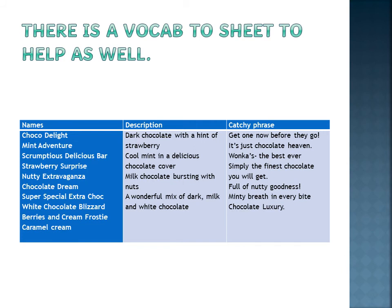For our description: a dark chocolate with a hint of strawberry; cool mint in a delicious chocolate cover; or at the very bottom, a wonderful mix of dark, milk, and white chocolate. Notice that these don't go together — they don't match; they're just bits you can magpie. And on the right we have some catchy phrases: 'Get one right now before they go,' 'Simply the finest chocolate you will get,' 'Full of nutty goodness,' 'Minty breath in every bite.'